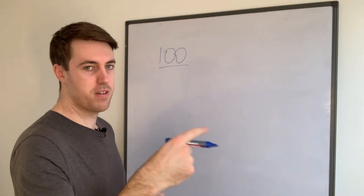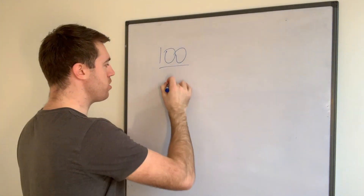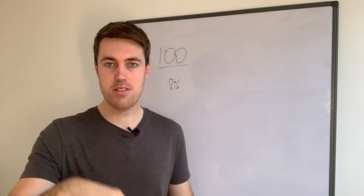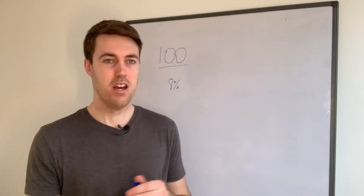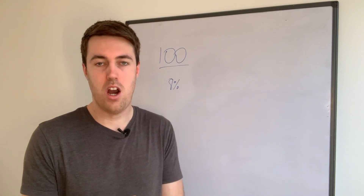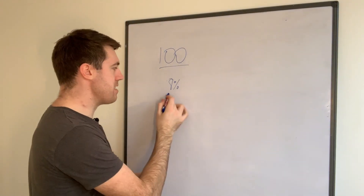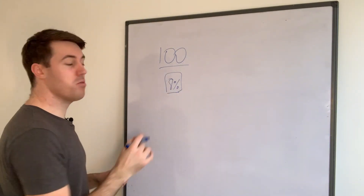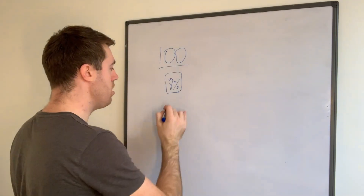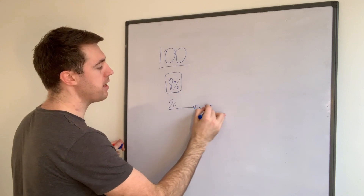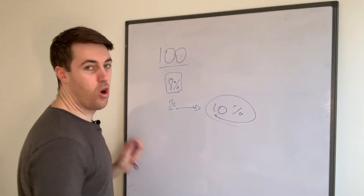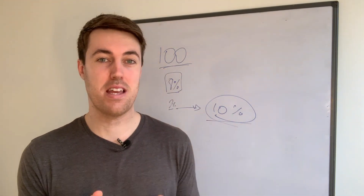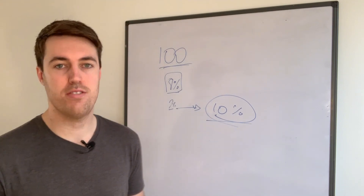So say 100 people are looking at your product every single day, and your current conversion rate is 8% — meaning for every 100 people that look at your listing, 8 people buy it. That's relatively low for what I'd be looking at, but it may be about average on Amazon. Now say we optimize our listing and squeeze an extra 2% out, giving us a conversion rate of 10%.